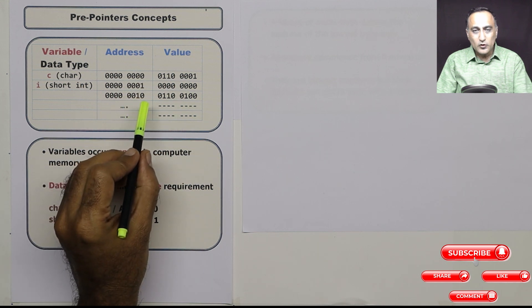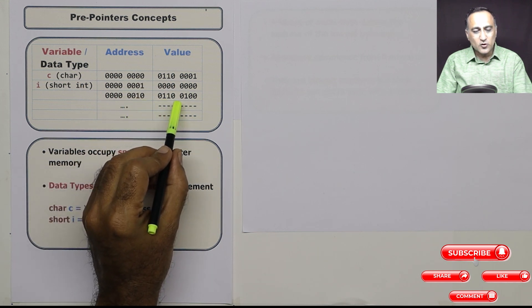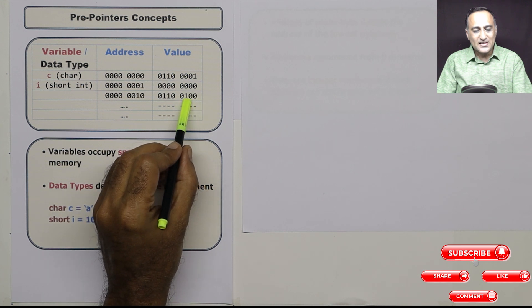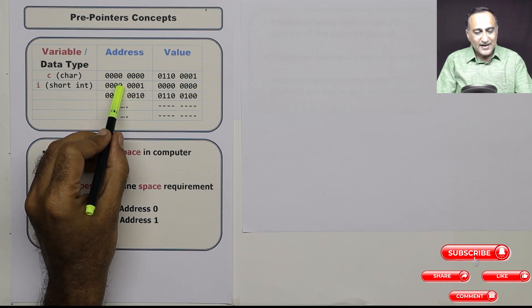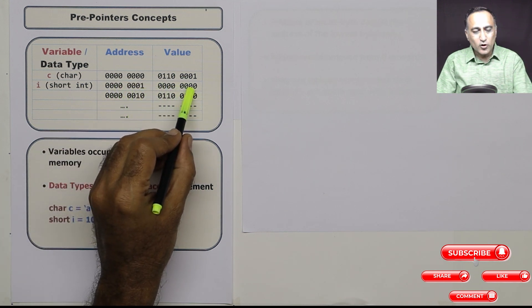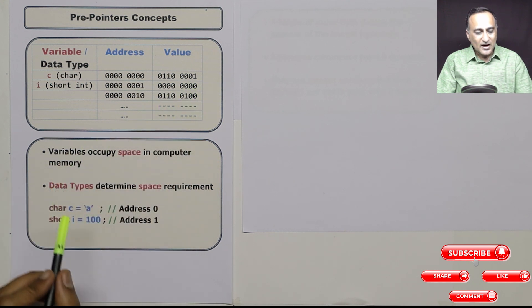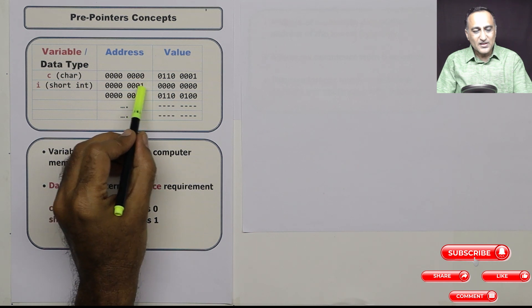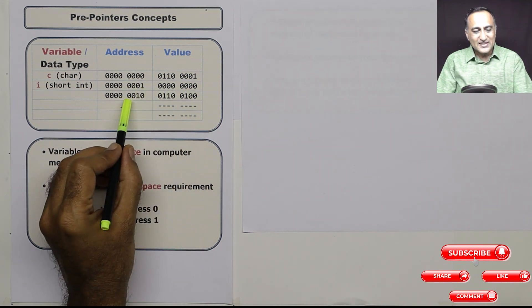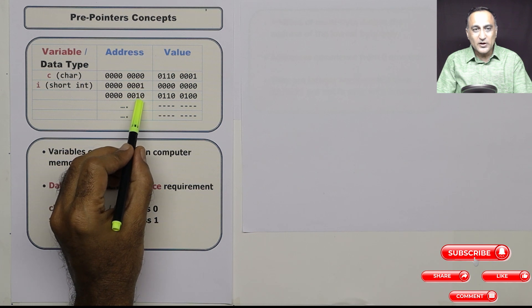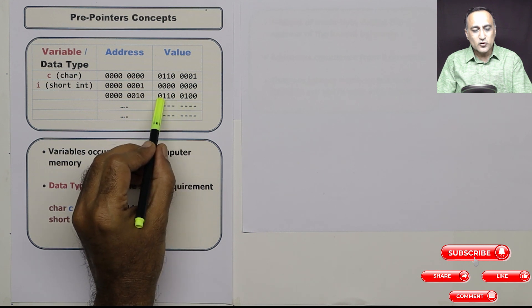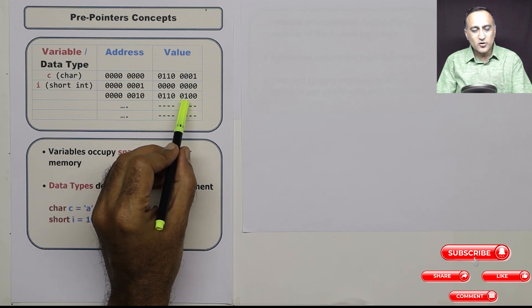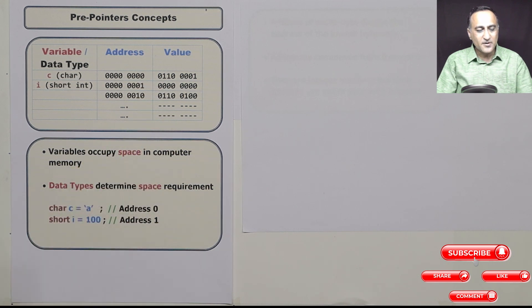And the next byte, which is byte two, it's going to have 0110 0100. This represents 100 in binary. So the lowermost address byte, that is address one, is going to compose of all zeros because 100 can easily be represented in one byte. So the first address is only going to have all zeros. The address with decimal equivalent of two has this particular representation of 100 in binary. So this 0110 0100 is 100 represented in binary.